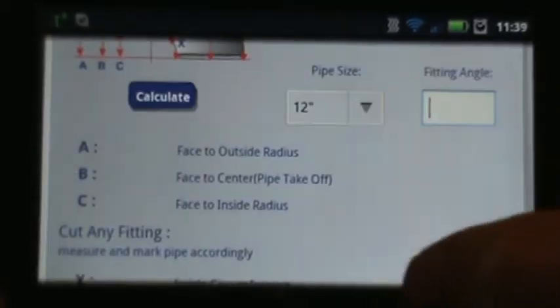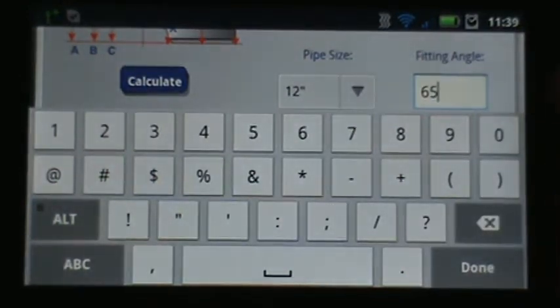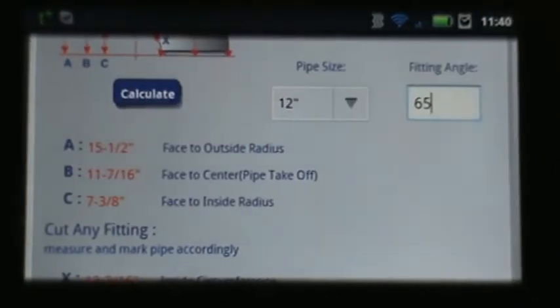We'll start by selecting a pipe size. We'll go with 12 inch. And we'll choose a 65 degree angle. And we will select calculate.